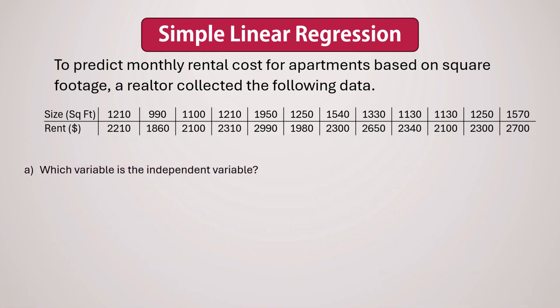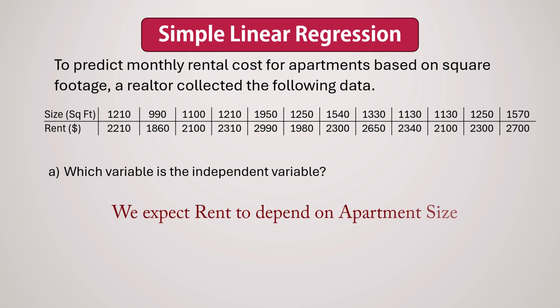Part A. To identify the independent variable, it's often helpful to first determine the dependent variable. In this scenario, we're looking at how monthly rent relates to apartment size. Logically, we would expect rent to depend on the size of the apartment and not the other way around.